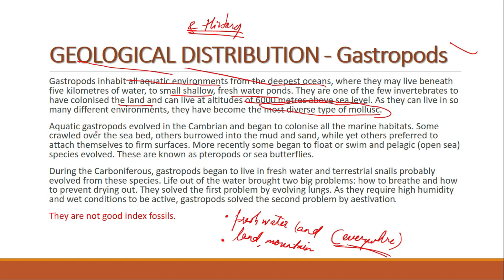Aquatic gastropods evolved in the Cambrian and became colonizers of all marine habitats. Some crawled over the seabed, others burrowed into mud and sand, while yet others preferred to attach themselves to firm surfaces. Most recently, some began to float or swim — pelagic species evolved, known as pteropods or sea butterflies. During the Carboniferous, gastropods began to live in freshwater, and terrestrial snails probably evolved from these species.